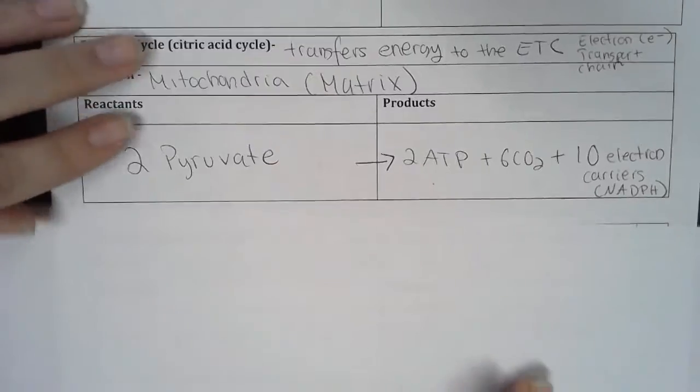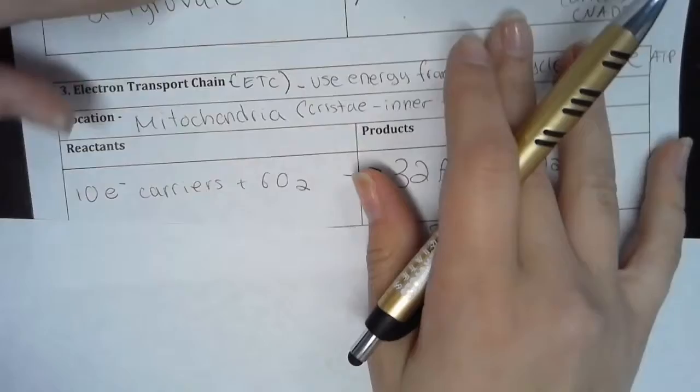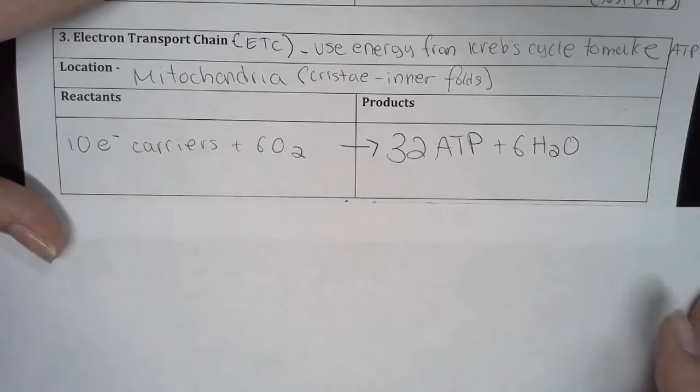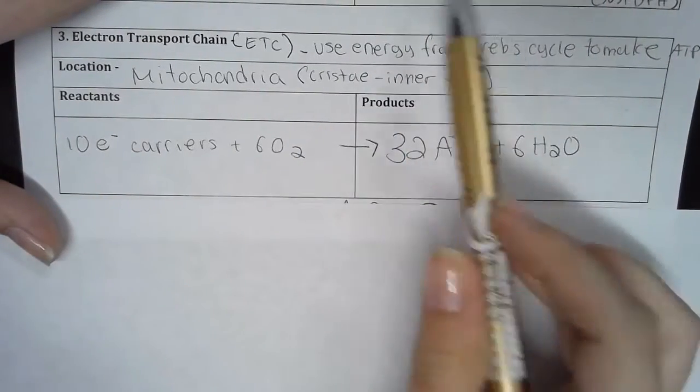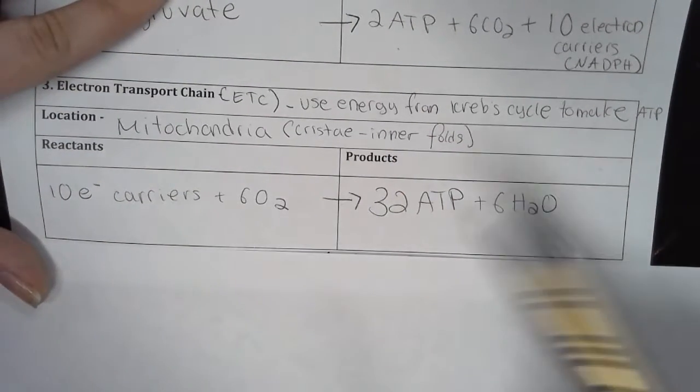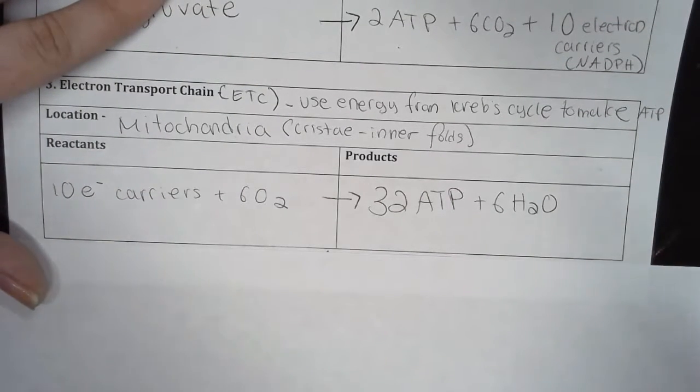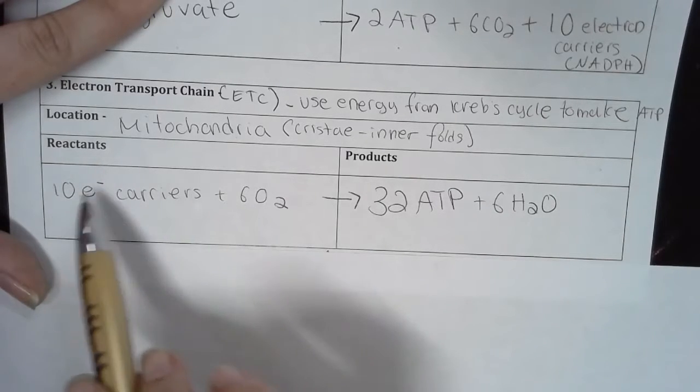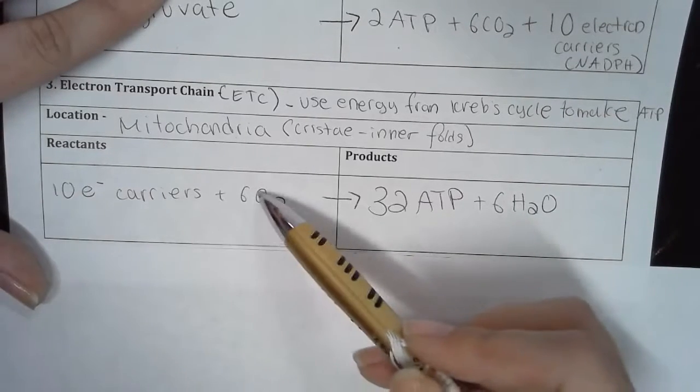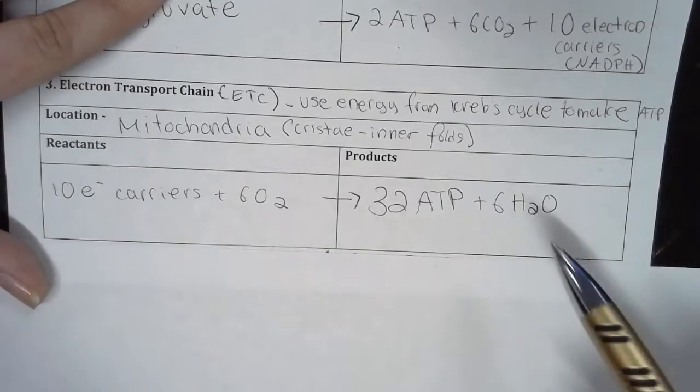My third step is, in fact, my electron transport chain. So, or I like to call it E-T-C because electron transport chain is just too long. Nobody has time for that. All right. So this uses the energy from the Krebs cycle. Remember, I produce energy to ATP to make essentially more ATP. This happens in the mitochondria specifically on the cristae or the inner folds of the mitochondria. My reactants for this are my 10 electron carriers that I produced here and six oxygen molecules. This altogether produces 32 molecules of ATP and then some water.